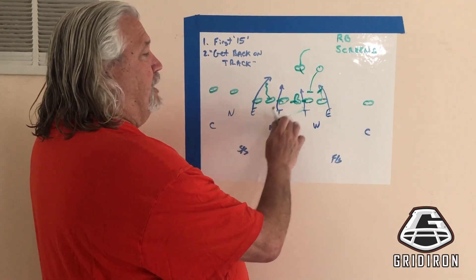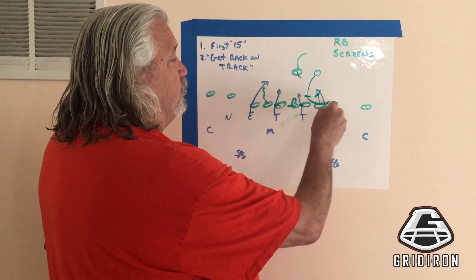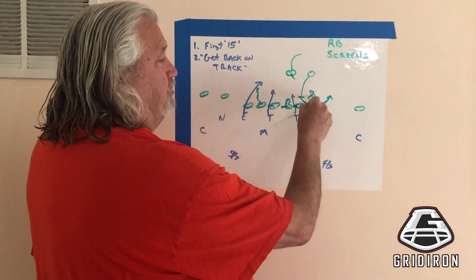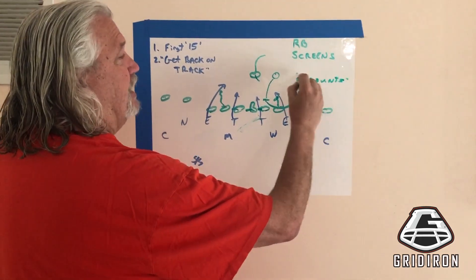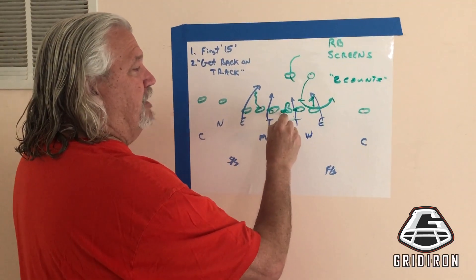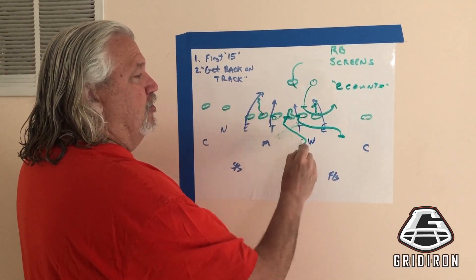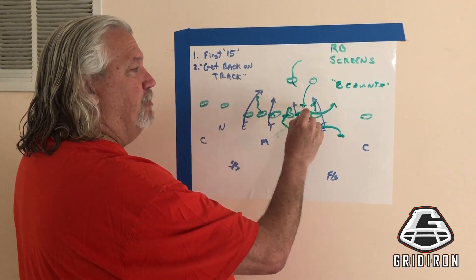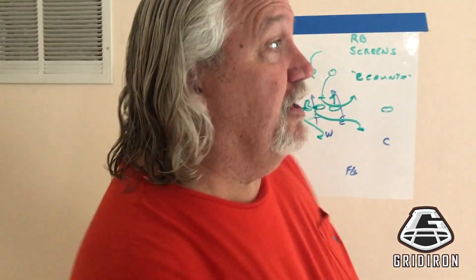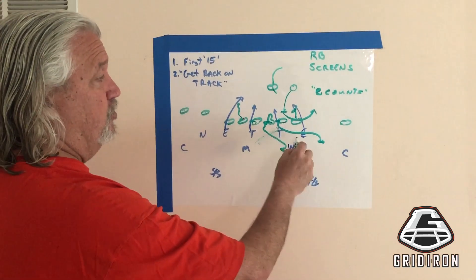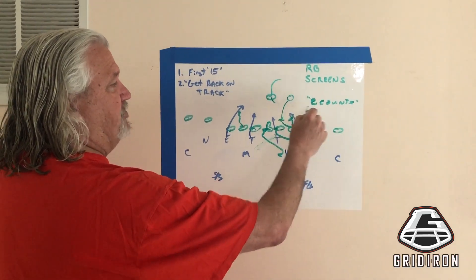It looks like a drop back pass to the defense. But what happens is once this guy goes up the field, it's going to take two counts before the offensive line releases. The center and the guard will release in front of the back. The back will step up, set — thousand one — show protection, then pop out. And by thousand two, the offensive line is in front of them. That's the classic screen.